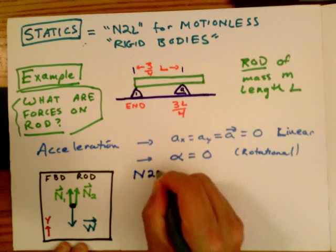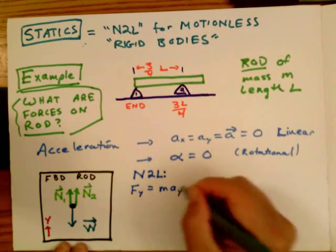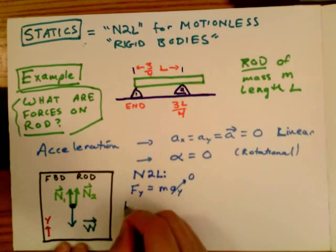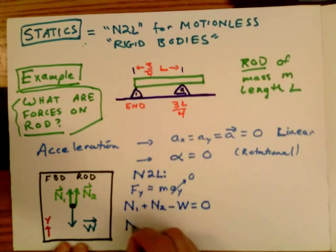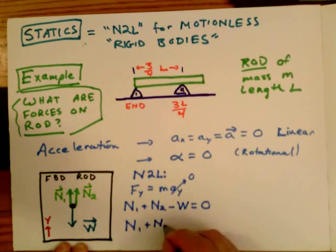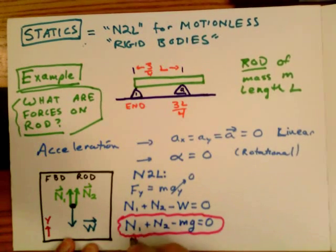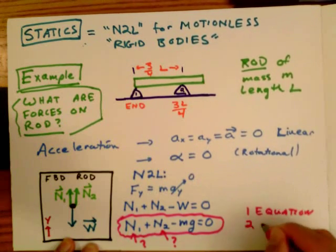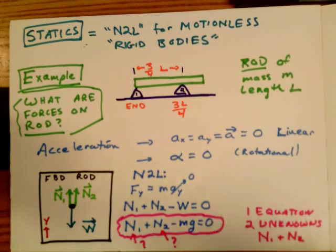So now we apply Newton's second law in the y coordinate. The net force in the y direction is equal to m times a sub y, which of course is zero. So N1 plus N2 minus the weight is equal to zero. So I have an equation N1 plus N2 minus mg is equal to zero. This is a nice equation, but it has two unknowns, N1 and N2, and so I'm not done. I have one equation with two unknowns. I have to keep going. I don't know what N1 is. I don't know what N2 is.